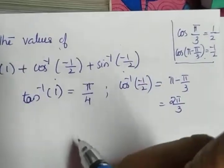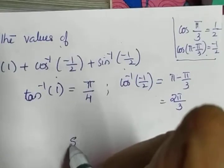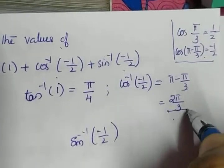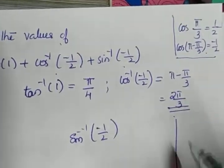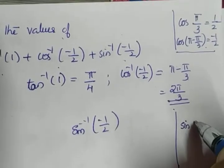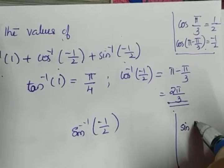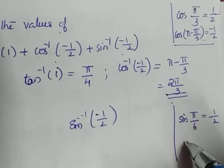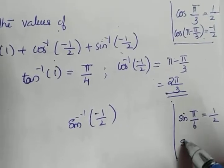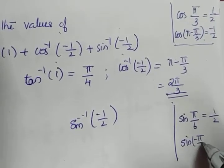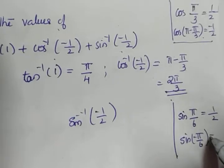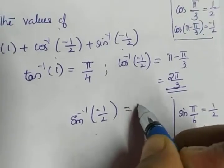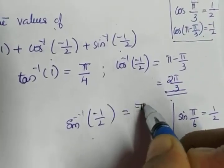Next, sin inverse of minus 1 by 2. Which value of sin gives you 1 by 2? Sin 30, that is pi by 6, gives you 1 by 2. When we apply the negative sign, sin of minus pi by 6 gives minus 1 by 2. So sin inverse of minus 1 by 2 equals minus pi by 6.